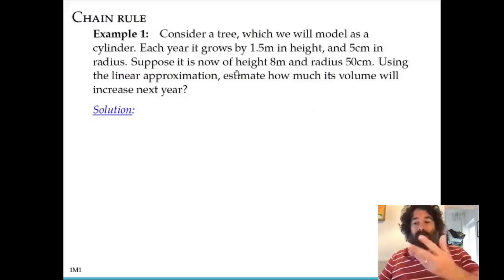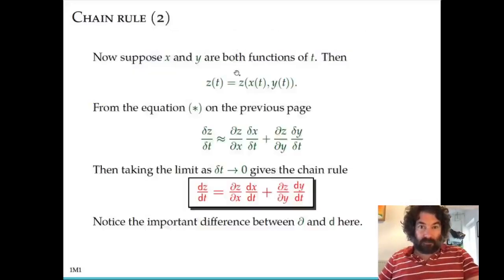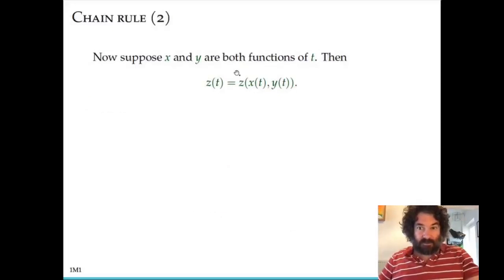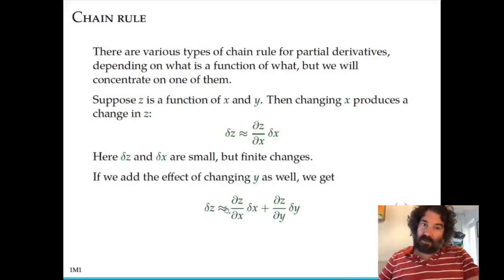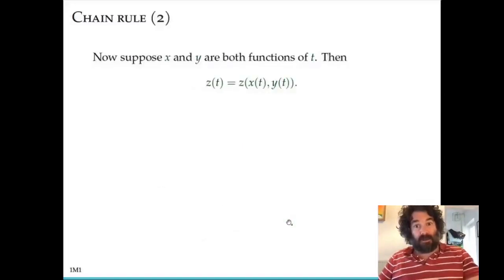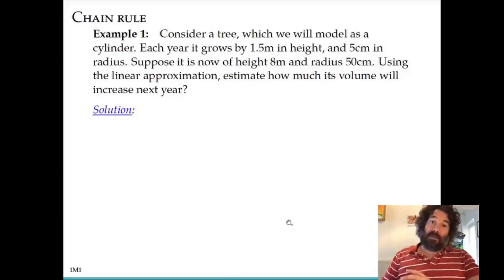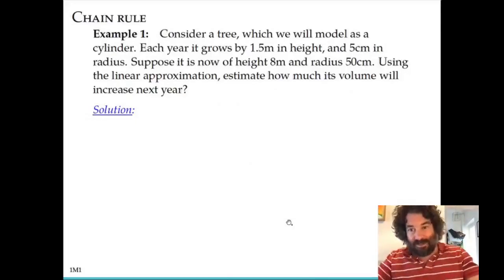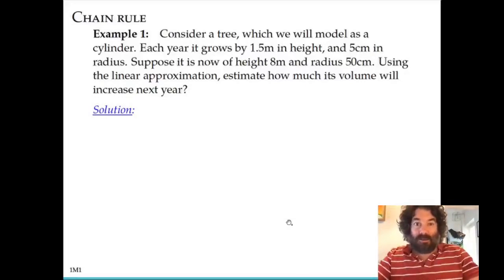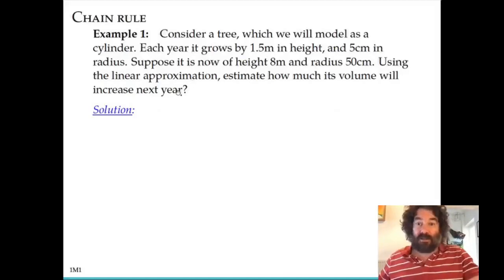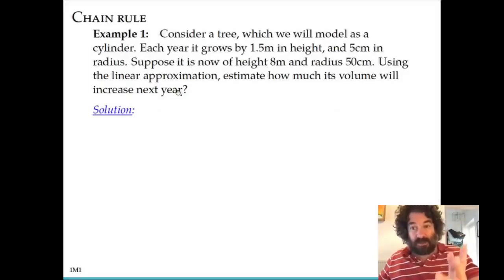I'm going to look at an example first using the linear approximation from the earlier slides. The case is: we're going to model a tree as a cylinder, which is an idealization. It grows by a certain amount — its height changes a certain amount each year and its radius changes. We want to know the change in the volume, so the volume depends on the height and the radius. We need these two variables — height and radius — and they each change by a certain amount.